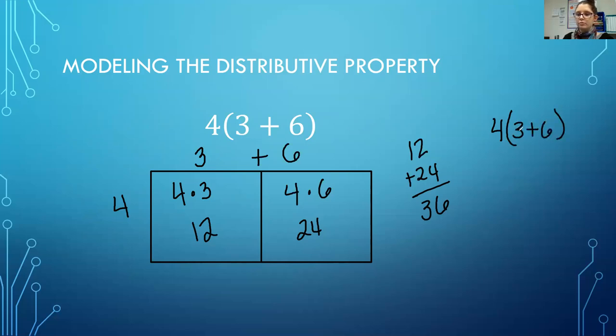Now if we were to have followed the order of operations, we would have 3 plus 6 is 9, bring down my times 4 and I'd still get thirty-six. So this is a way to simplify our work and sometimes to make the work easier.